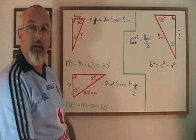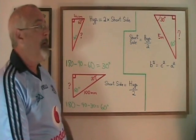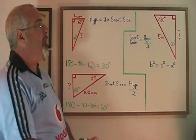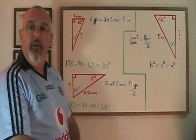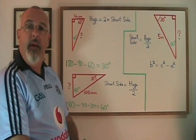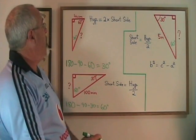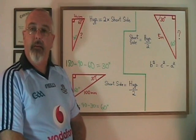This becomes very routine after doing it a couple of times. When you see a right triangle with a 90 and a 30, you know the missing measure must be a 60. And when you see a right triangle with a 90 and a 60, you know the missing measure must be a 30.